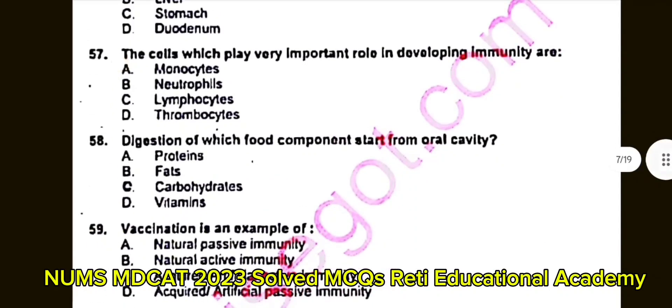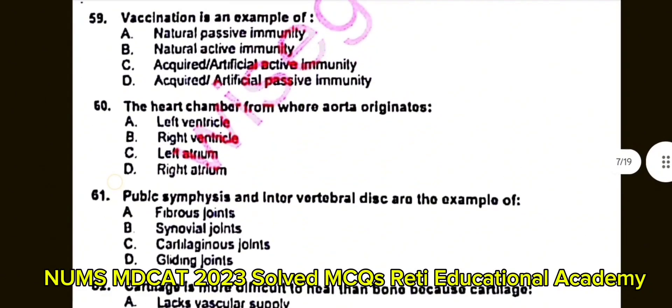Question number 58: Digestion of which food component starts from the oral cavity? A. Proteins. B. Fats. C. Carbohydrates. D. Vitamins. The correct answer is C: Carbohydrates.